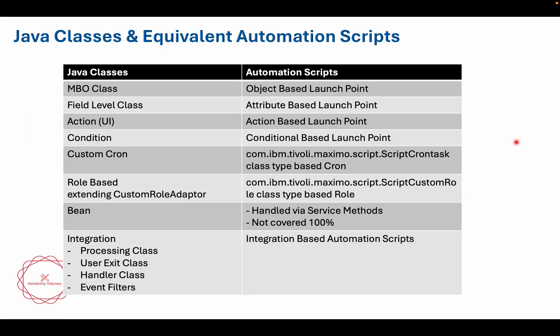For all these classes, there are equivalent automation scripts available. The reason to use automation scripts is that you can write them in Python or JavaScript and they do not require downtime. The problem with Java classes is that whenever you want to extend them, you have to deploy the Java classes, which requires downtime — that is not the case with automation scripts. This table helps you identify, for each kind of Java class, what the equivalent automation script would be.